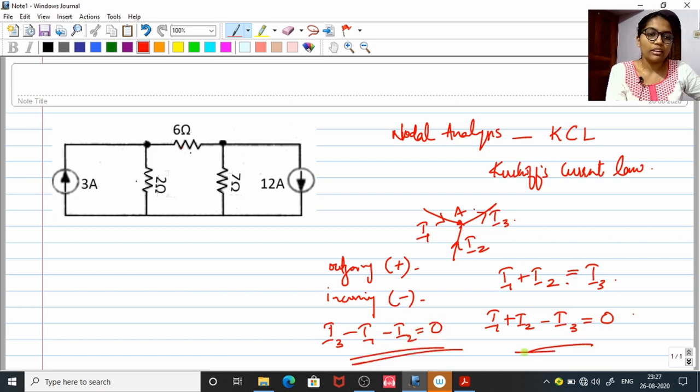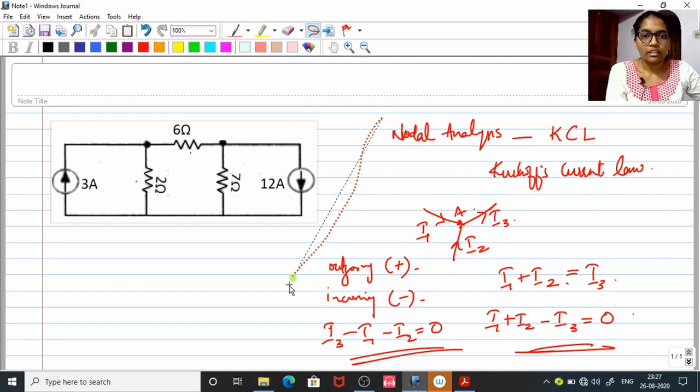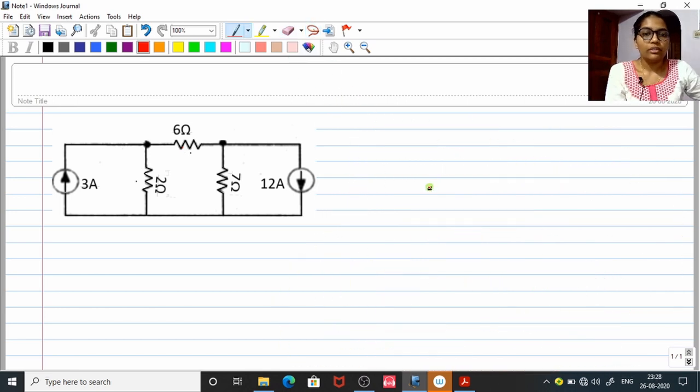Anyway, these are all the basics which you had in plus 2. Now, let us apply the same to solve the question, to find the current through 6 ohm.